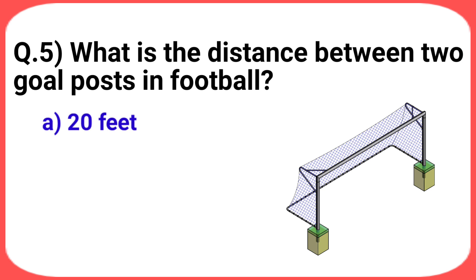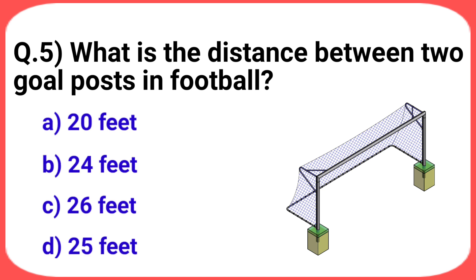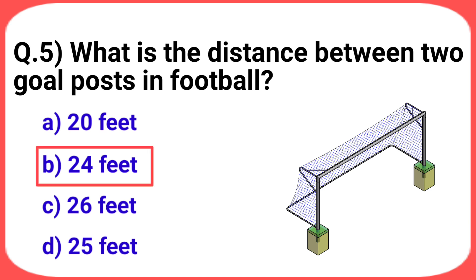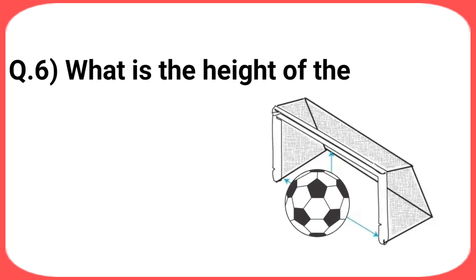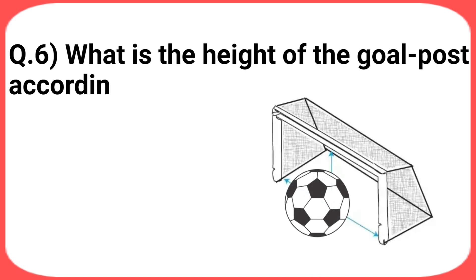Next question: what is the distance between two goalposts in football? Your options are: a) 20 feet, b) 24 feet, c) 26 feet, d) 25 feet. The answer is option b: 24 feet.